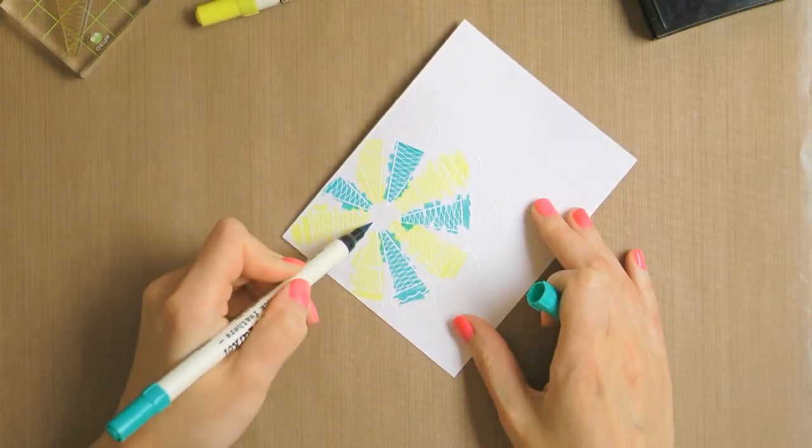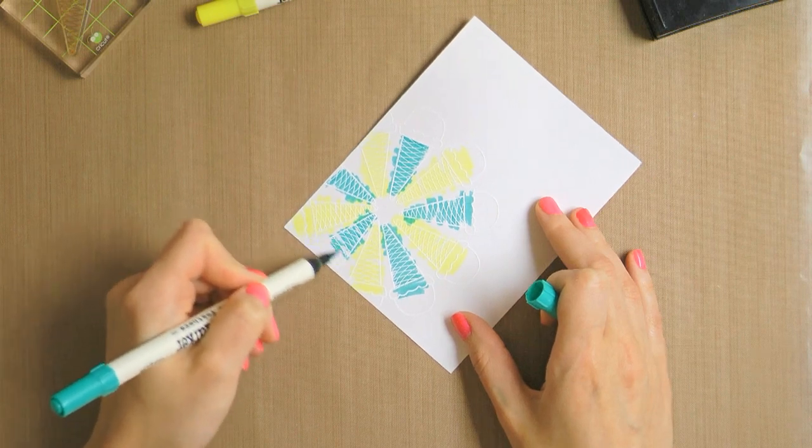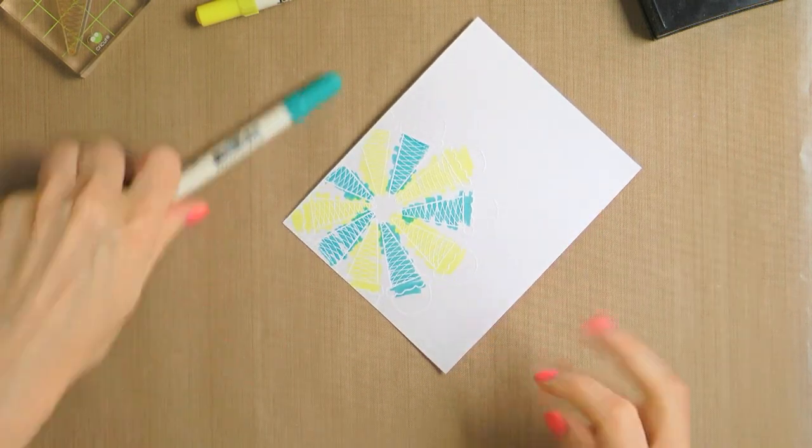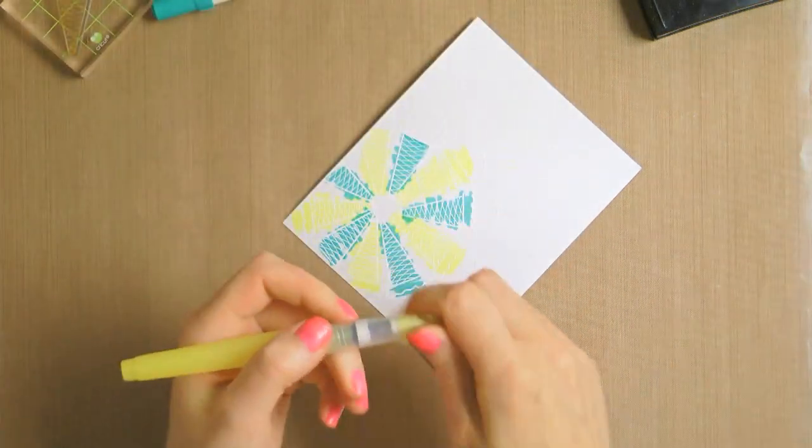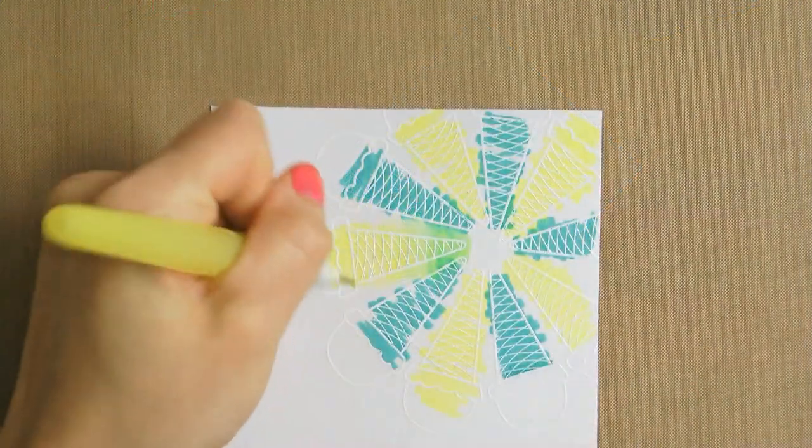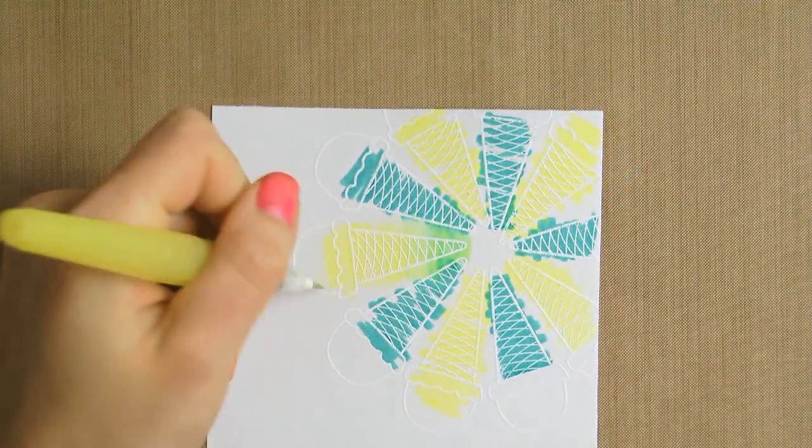I then used a small water brush and blended them together, creating some nice blue, green, and yellow shades. I wasn't being very careful or specific about my coloring. I simply wanted to blend the colors all over the embossed images.